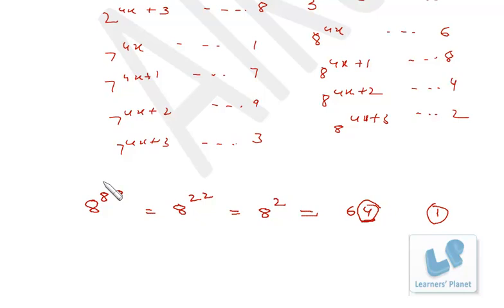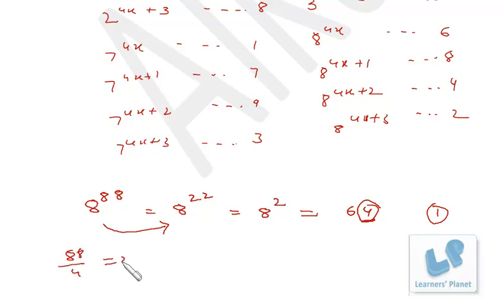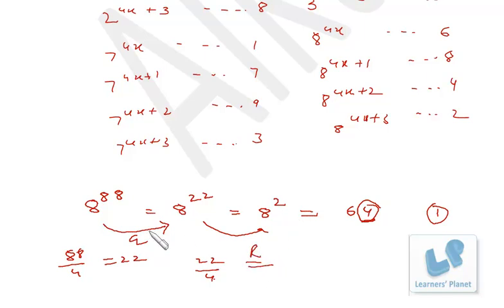The second mistake is that you are dividing 88 by 4 and writing the quotient (which is 22), and then dividing 22 by 4 and writing the remainder. So somewhere you use the quotient, somewhere the remainder — that is not correct mathematics. Since the first step itself is wrong — that 8 raised to 88 equals 8 raised to 22 — that's why you are getting 4 as the unit digit.